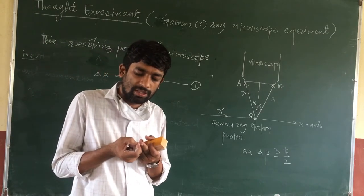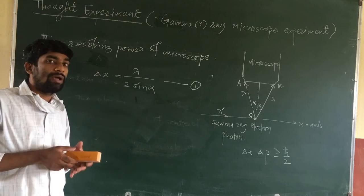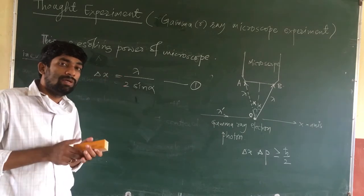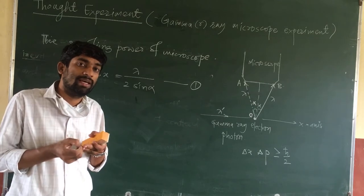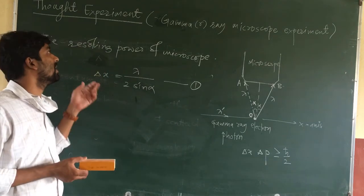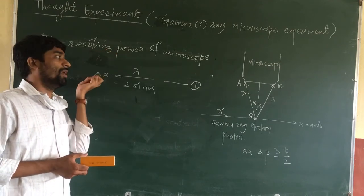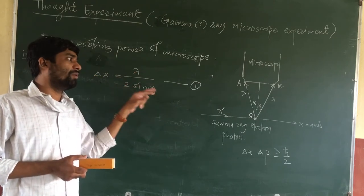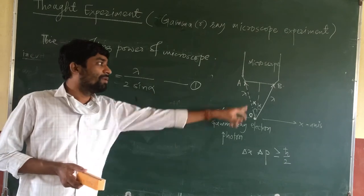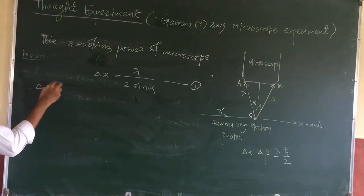If an object moves less than this distance, the microscope will not be able to detect that movement. That is why the uncertainty in measurement of position is the resolving power of the microscope: delta x equals lambda divided by 2 sin alpha, where lambda is the wavelength of the scattered gamma rays and alpha is the semi-vertical angle of the cone.